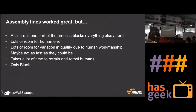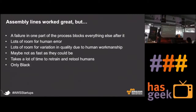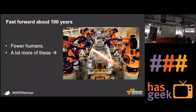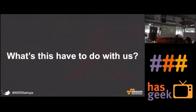However, assembly lines had their own problems — they were all human-driven, so there was scope for errors, and quality was not consistent. Two subsequent cars from the same assembly line may not have the same characteristics. And of course, Henry Ford's famous comment: you can order any color of car as long as it is black. Fast forward 100 years and now we have robots manufacturing cars — that is where automation comes in.